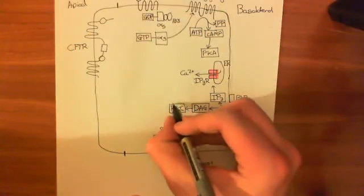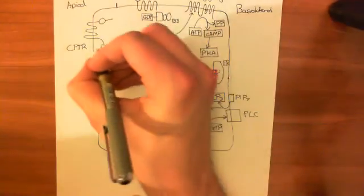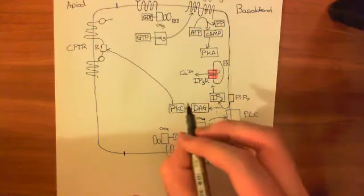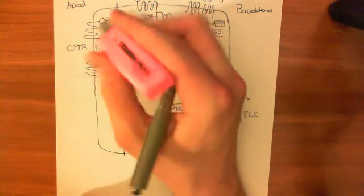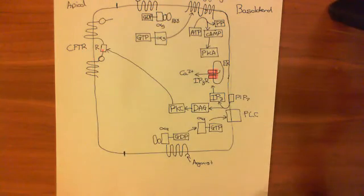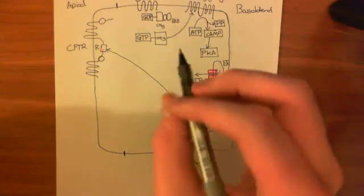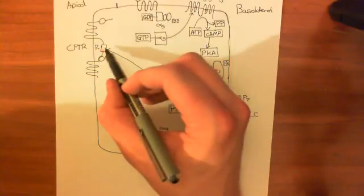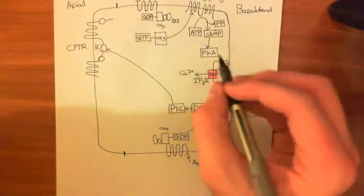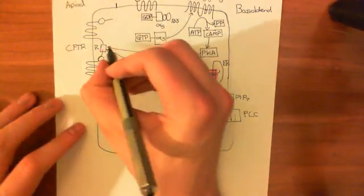What's going to happen is that protein kinase C goes and phosphorylates the R domain — the regulatory domain — of CFTR. When it phosphorylates it, it adds a phosphate group onto the regulatory domain. This is going to change the conformation and expose a phosphorylation site where protein kinase A can phosphorylate. So protein kinase A is now going to phosphorylate this regulatory site.